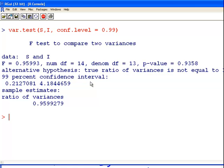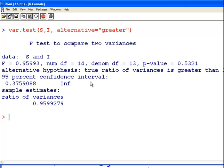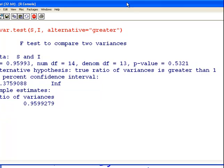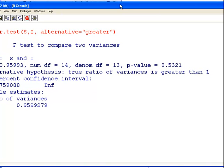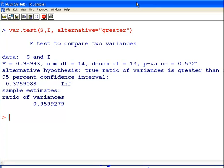You can do some other things as well. You could do a greater than test. So alternative is greater. This says that the true ratio of variances is greater than 1. That would say the Scottish variance would be higher than the Irish variance. You fail to reject the null hypothesis here. That's not what we were asking, but it's handy to know these other scenarios in case that comes up in exams. Let's leave it there.